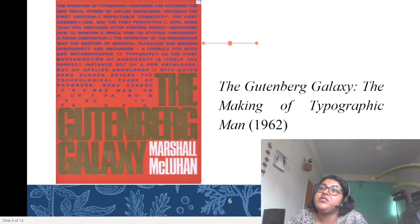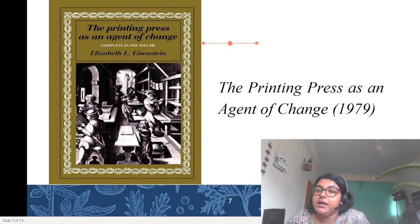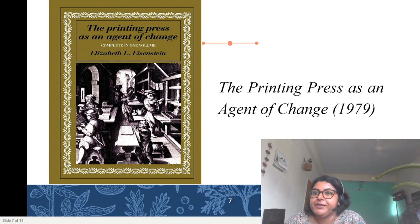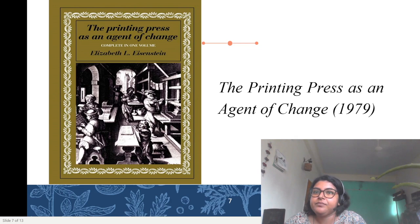Elizabeth Eisenstein's 1979 volume 'The Printing Press as an Agent of Change' is perhaps one of the most significant volumes in this regard. Eisenstein's work is the epitome of the claim that books make history, as she observes the transformations brought forth by the emergence of the letterpress. As far as Eisenstein is concerned, print was an unacknowledged revolution. The invention of movable type and the printing press allowed the spread of knowledge to a wider population in Europe than simply the literate elite and the church.